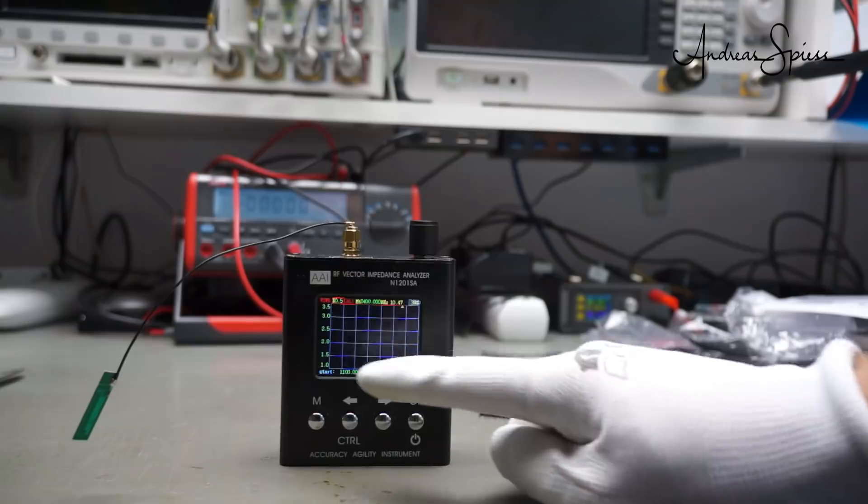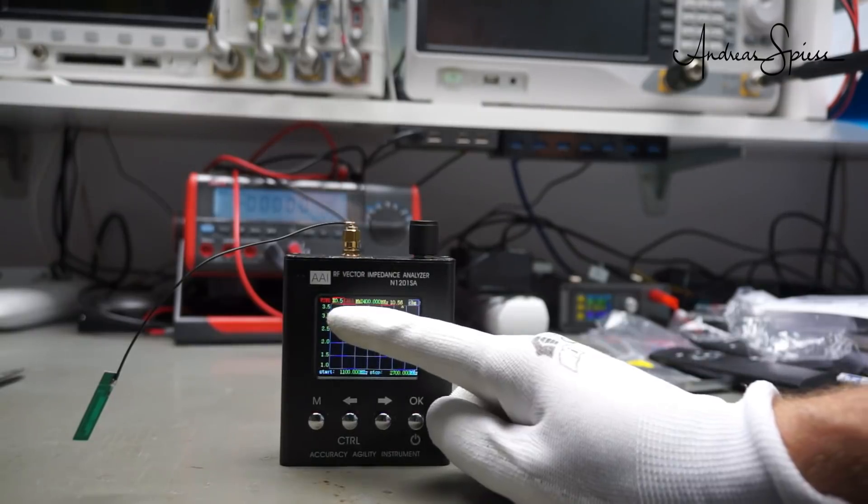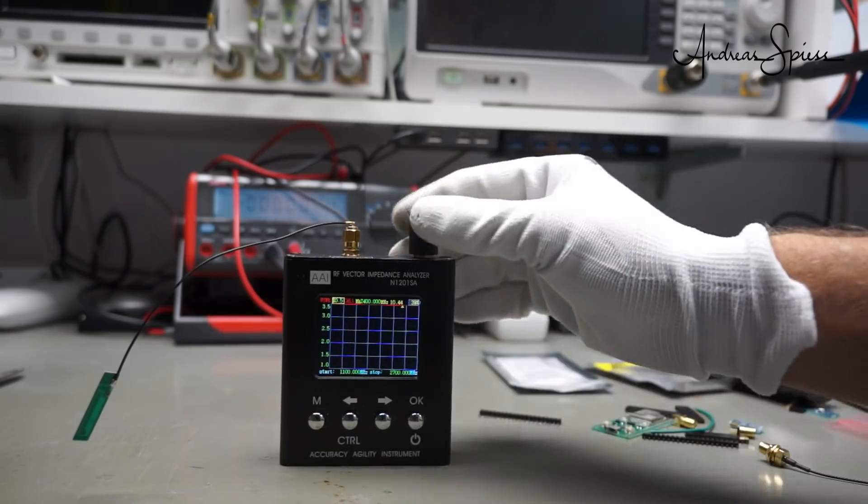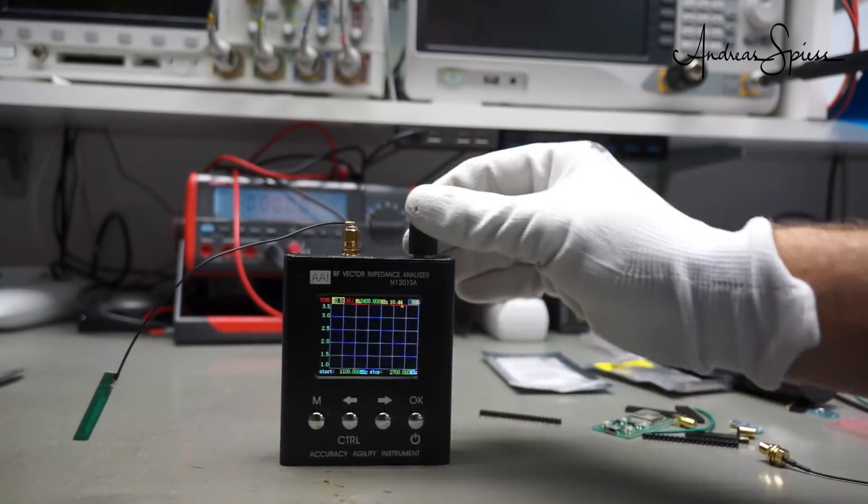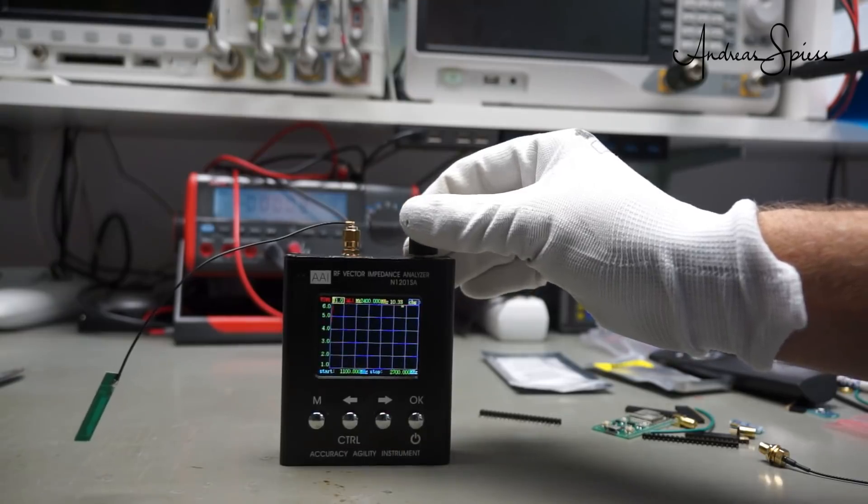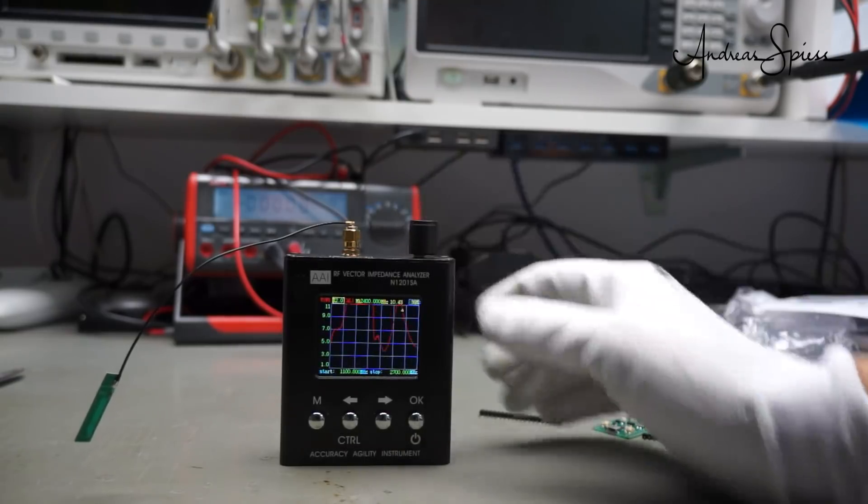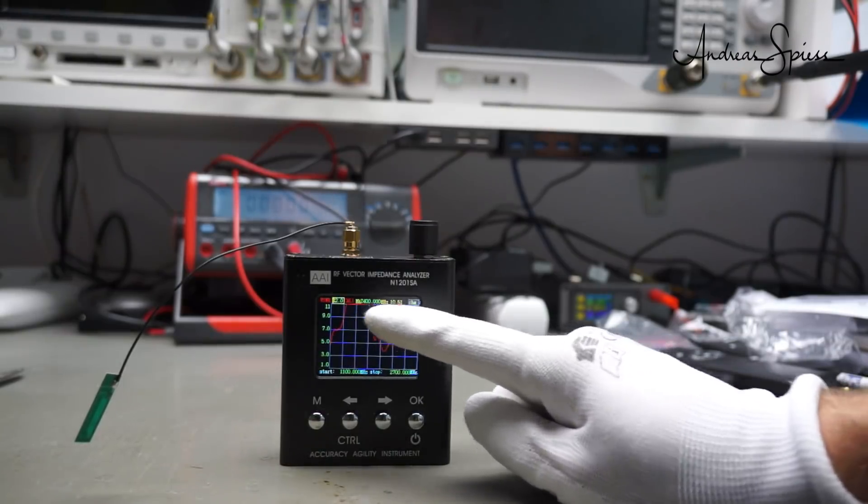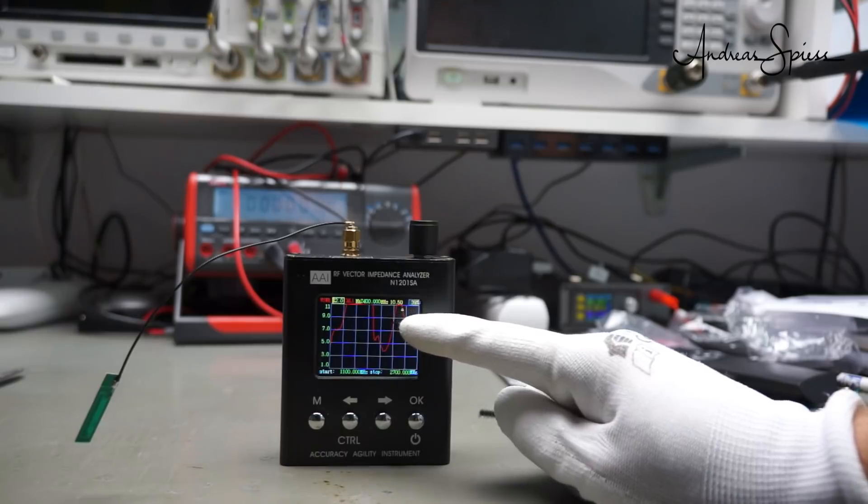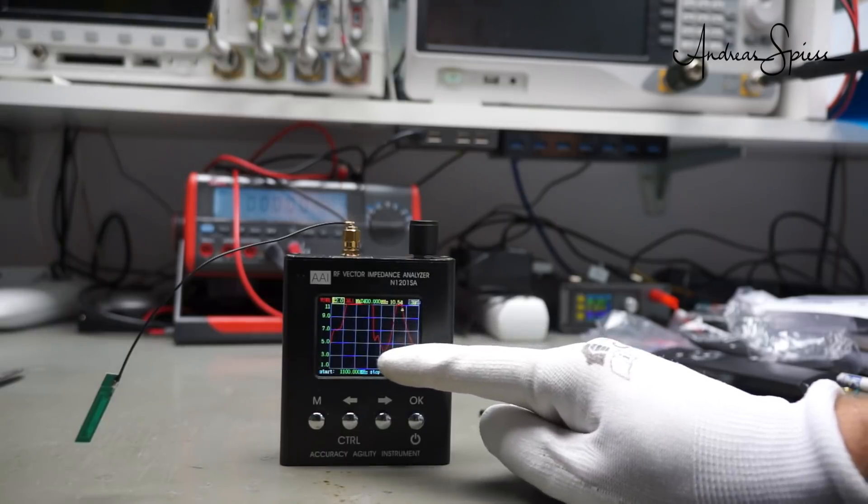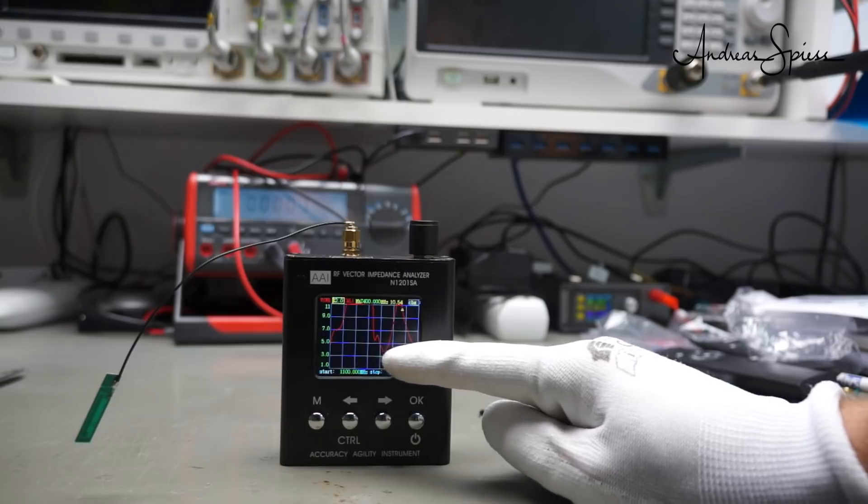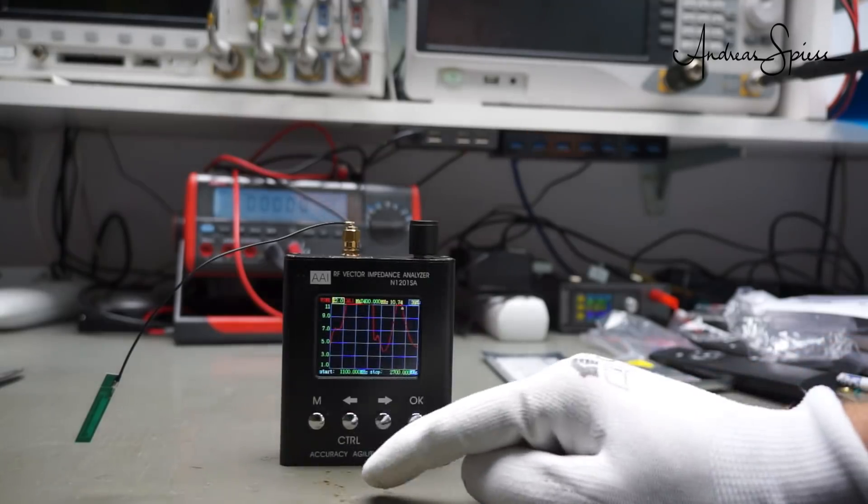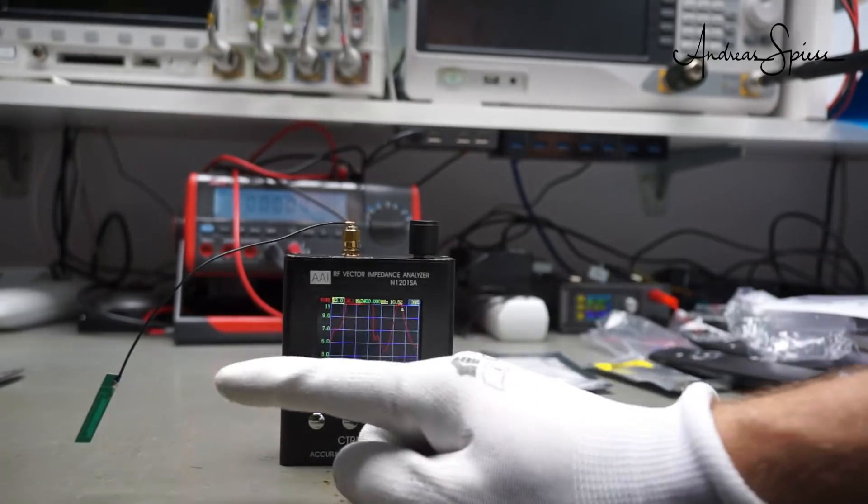This antenna here, you do not see anything. It has a SWR of more than 3.5. So we have to reduce the sensitivity. And you see, at 2.4 GHz, it nearly has the maximum instead of the minimum. The minimum would be here, but still above 3.0. So this antenna here is completely useless on 2.4 GHz.